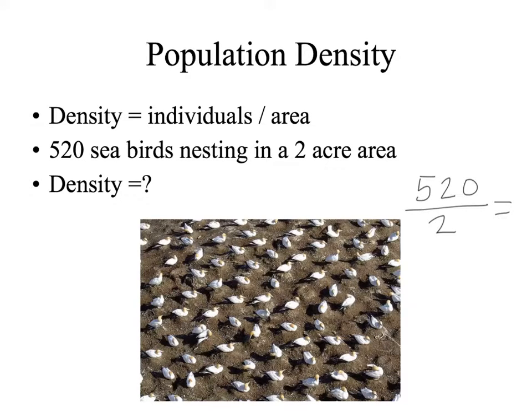Here is an easy math problem: 520 individual birds divided by 2 acres gives us 260 birds per acre.